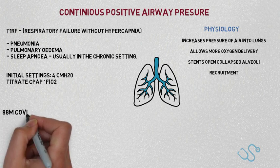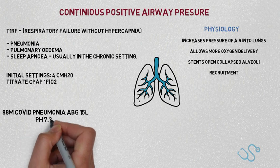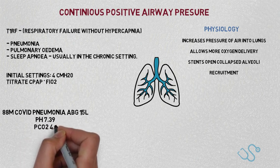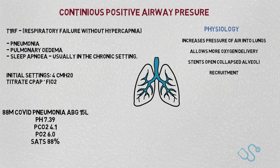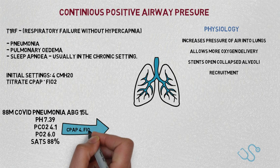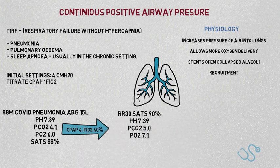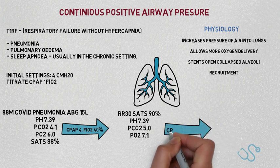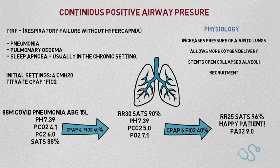Here's a quick example: an 88-year-old man with proven COVID pneumonia. Despite optimal initial medical treatment, his arterial blood gas on 15 litres shows a pH of 7.39, CO2 of 4.1, PO2 of 6.0, saturations of 88%. You start him on CPAP with a setting of 4 and FiO2 of 40%. His SATs improve to 90% but his respiratory rate is still 30, so you increase CPAP to 6 with FiO2 of 40%. Now his respiratory rate is 25, SATs are 96%, and he's looking a lot more settled.